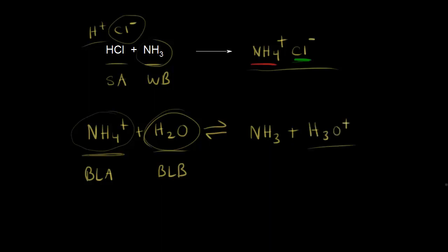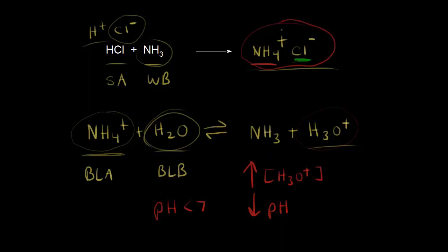We've increased the concentration of hydronium ions in solution, so our pH is no longer seven — we're going to decrease the pH and have an acidic solution. The pH is now less than seven. An aqueous solution of ammonium chloride has a pH less than seven. A salt formed from a strong acid and a weak base gives you an acidic solution.